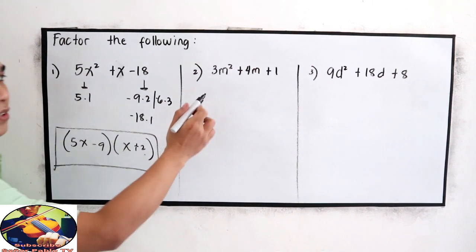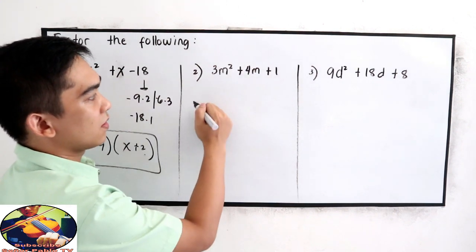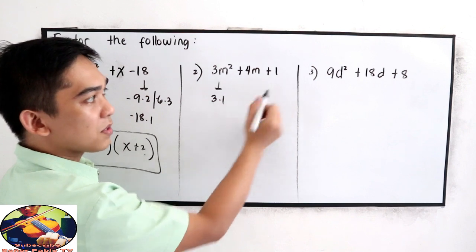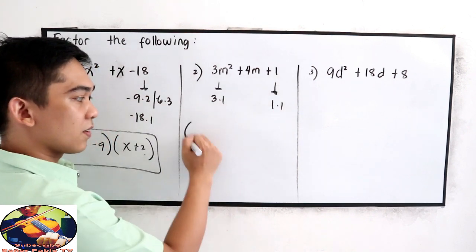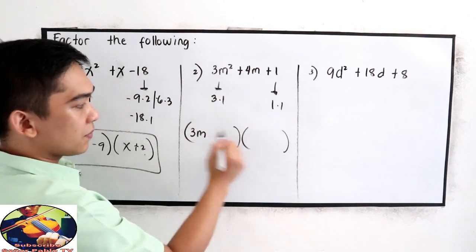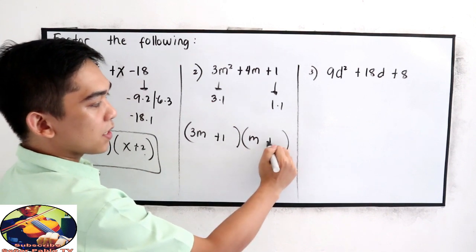Now, for number 2, 3m squared plus 4m plus 1. Factors of 3 are 3 times 1 or 1 times 3 and for 1, 1 times 1. So we have 3m, then m plus 1 plus 1.